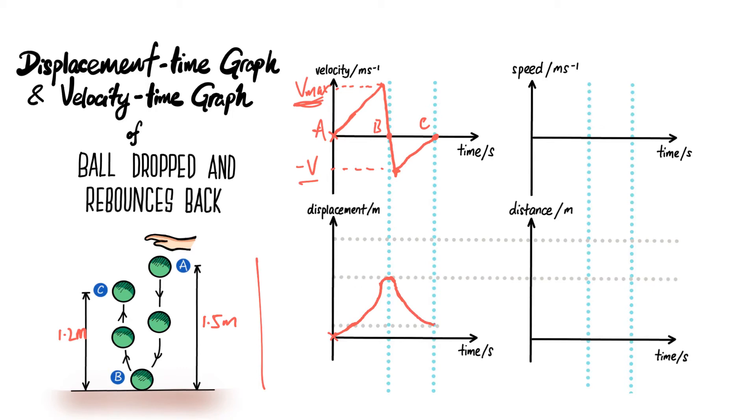So one thing to take note is for the displacement: this will be your 1.5 meters from here all the way here, and this marking here, the displacement is actually 0.3 meters. Because as the ball goes from B to C, this distance here is actually 1.2 meters, so take note of that.